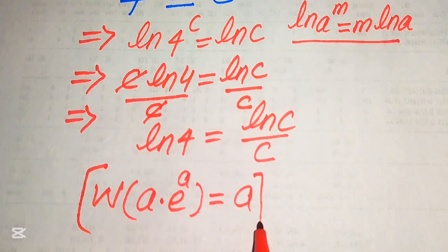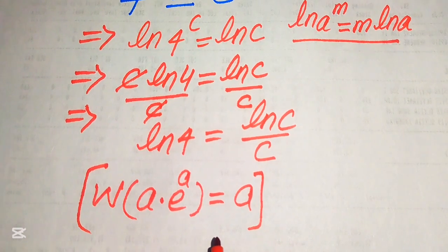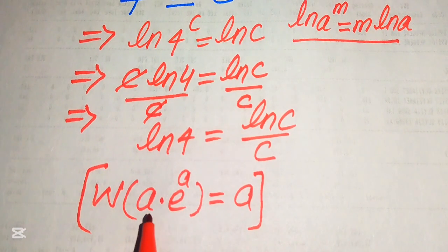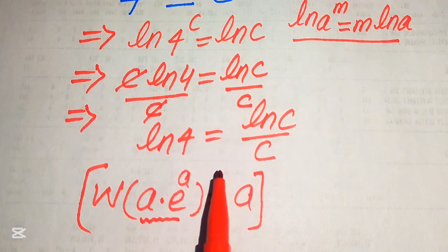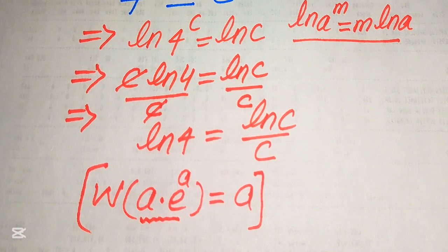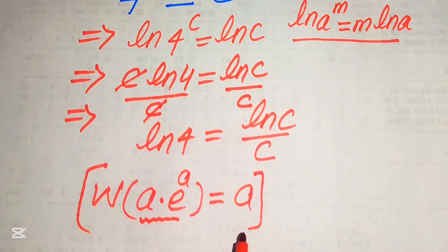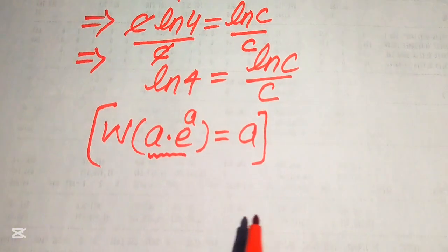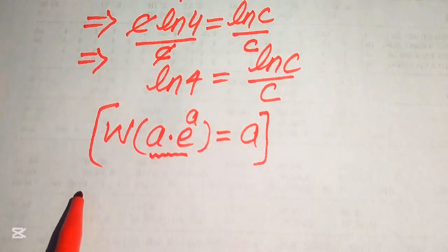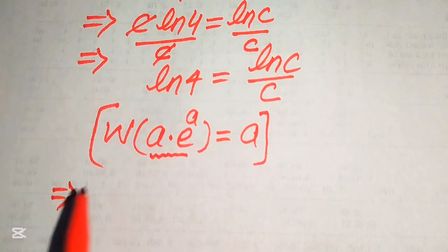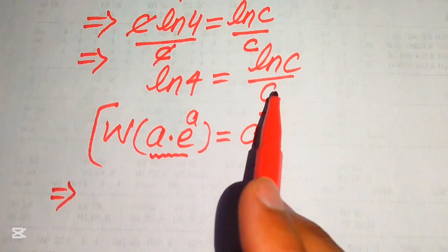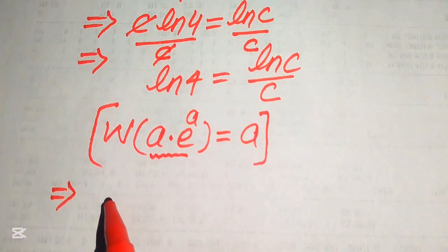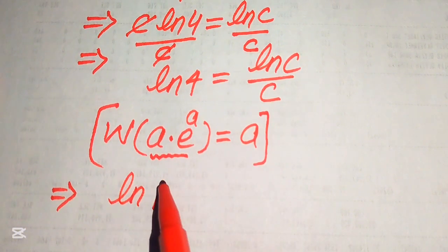According to this Lambert W function, we need to first transform the above equation into this form, and after that we can apply the W function and solve further. We need to focus on the right hand side, where we have log c over c.